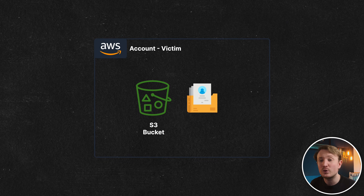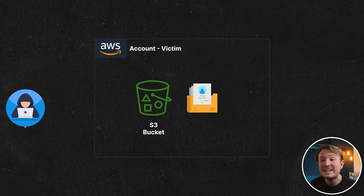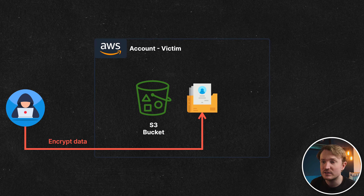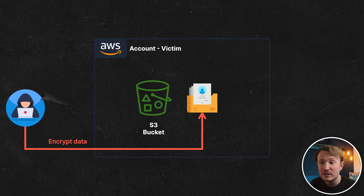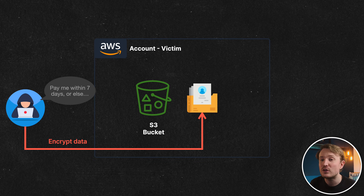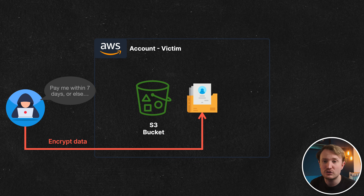Let's imagine this scenario: an organization is storing a bunch of critical data in Amazon S3 within their AWS accounts. A threat actor gains access to those S3 buckets and that data, and then they start to encrypt it. They leave a ransom note and give the victims seven days to pay, or else they'll either delete the data or publish it to the internet.